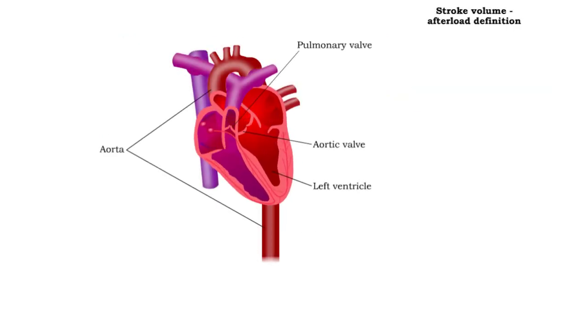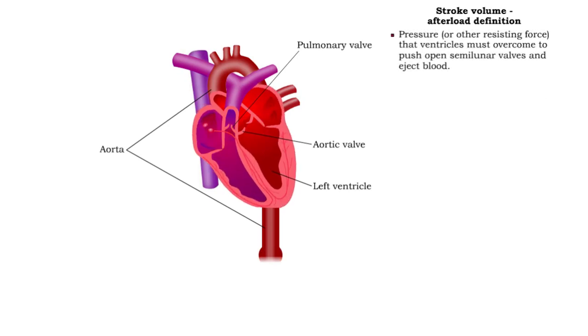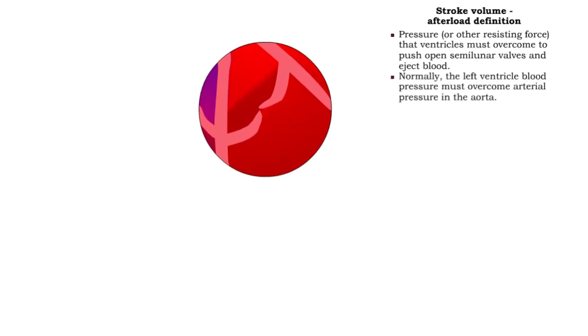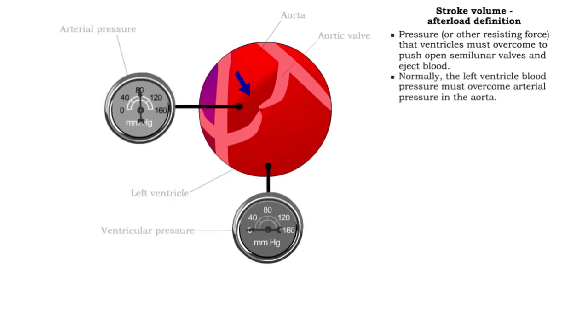Afterload is the pressure or force that the ventricles must overcome to push open the semilunar valves and eject blood. Blood pressure in the left ventricle must overcome arterial pressure in the aorta in order to open the aortic valve.